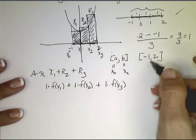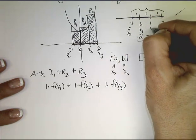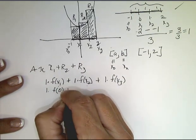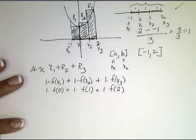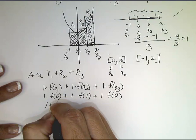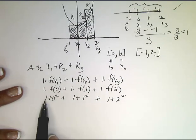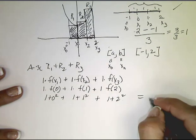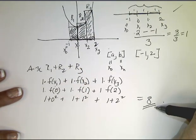Now I can find these values by plugging them into the original function. If -1 was x₀, then 0 was x₁, 1 was x₂, and 2 was x₃. So this is 1·f(0) + 1·f(1) + 1·f(2). f(0) = 1 + 0² = 1, f(1) = 1 + 1² = 2, f(2) = 1 + 2² = 5. That's 1 + 2 + 5 = 8. So this area under the curve is about 8, but not exactly 8.